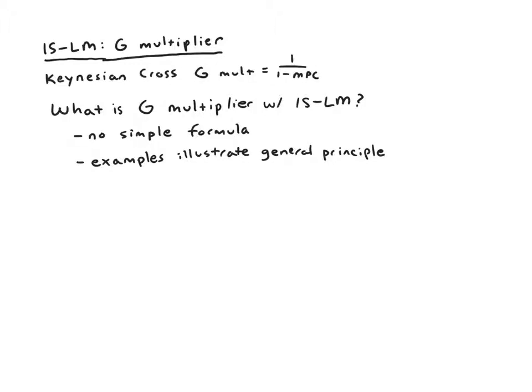So let's review the concept of the G multiplier, the government purchases multiplier. The idea with the Keynesian Cross was that for each dollar increase in government spending, this would lead to higher planned expenditure and then ultimately higher actual spending in equilibrium. But we found that it wasn't like for each dollar more you spent you would get one dollar more of output.